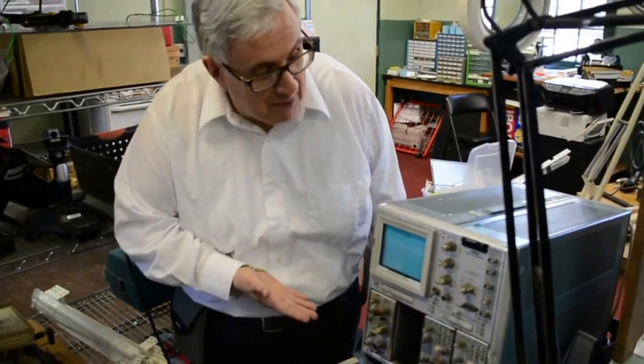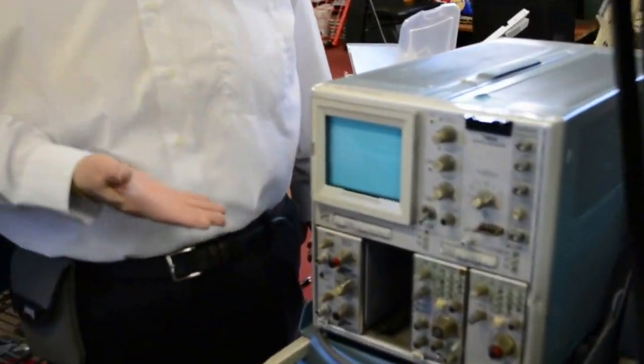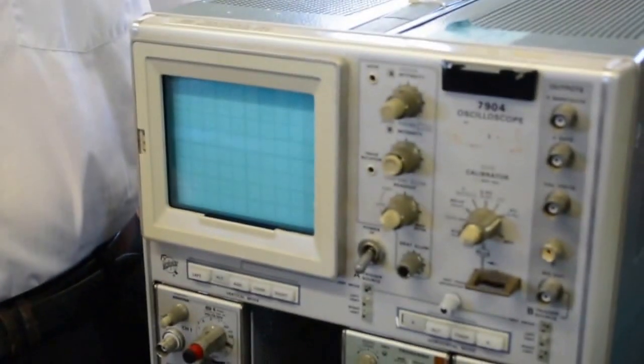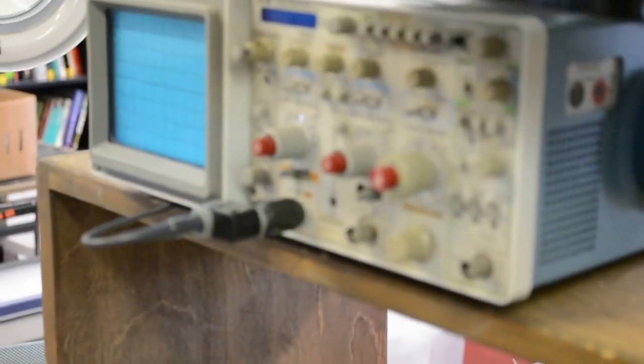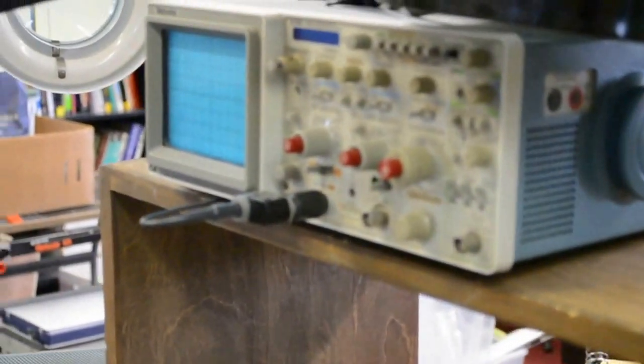Okay, this is an oscilloscope. It's ancient, but it still works. It's not a fancy digital one like the new ones, but if you don't have a scope and you need it, it'll work very nicely. And you also have the 2236. Yeah, that's a little bit newer one.